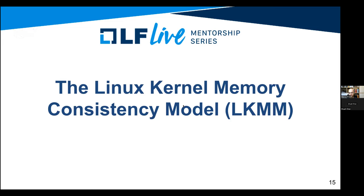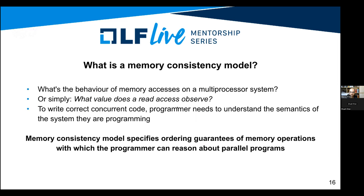A memory consistency model is a specification about how loads and stores are observed in the presence of concurrency. The simple question we want to answer is: what value does a read access observe? To write correct concurrent code, the programmer needs to understand the semantics of the system they are programming. The memory consistency model specifies precisely the ordering guarantees of memory operations with which programmers can reason about their parallel programs.